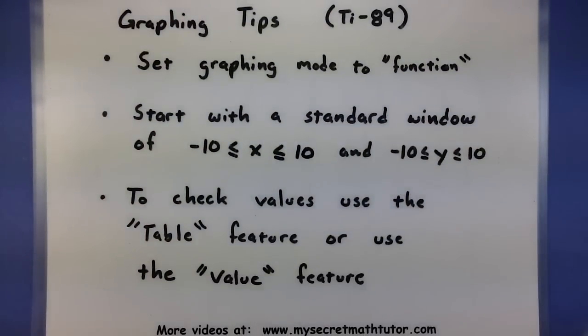Before we put in our function, we want to make sure that the mode is set to function. This will make sure that we can put the parameters in the right spot. We'll also want to set our window to a standard window so that our x values are between negative 10 and 10 and our y values are between negative 10 and 10.